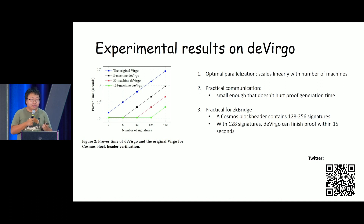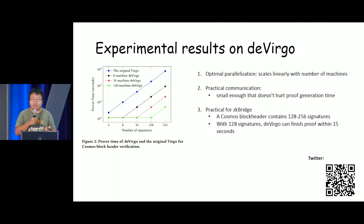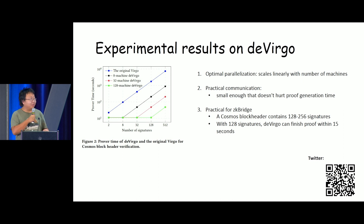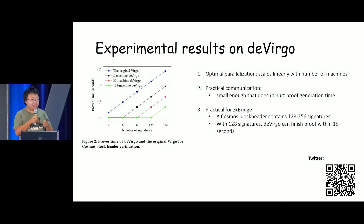Additionally, we have practical communication overhead. Combined, we can get a practical ZK Bridge using the deVirgo scheme. Proving hundreds of signatures takes only around 15 seconds solely on CPU — there is no GPU optimization — which means we can still improve this number by a large factor if we use GPU or ASIC.